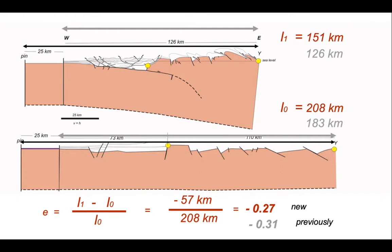The value we first calculated was minus 0.31. The structures are the same structures. The strain is the same strain. But the way we've set the problem up has been different. And perhaps you can see why.